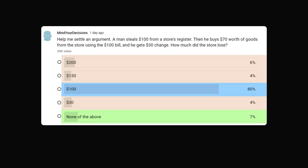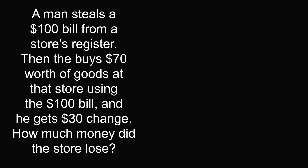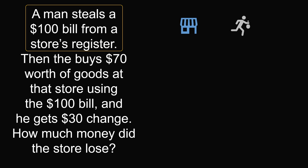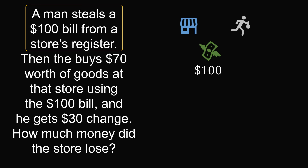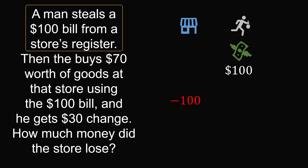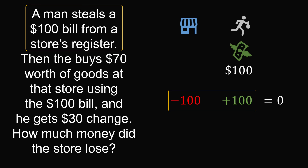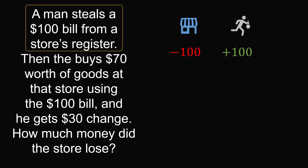Let's go over how to figure out the answer of $100, going through it very carefully. Starting with the first sentence: a man steals a $100 bill from a store's register. The store has a $100 bill in its register and that gets stolen. The store has lost $100 — this is minus 100 — and the thief has gained $100, which is plus 100. Negative 100 plus 100 equals zero, so our accounting is balancing out correctly.